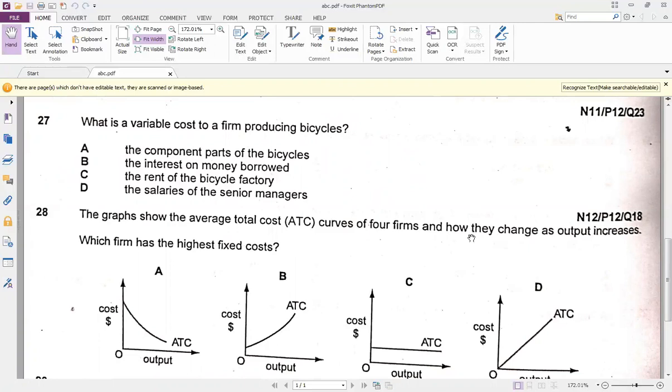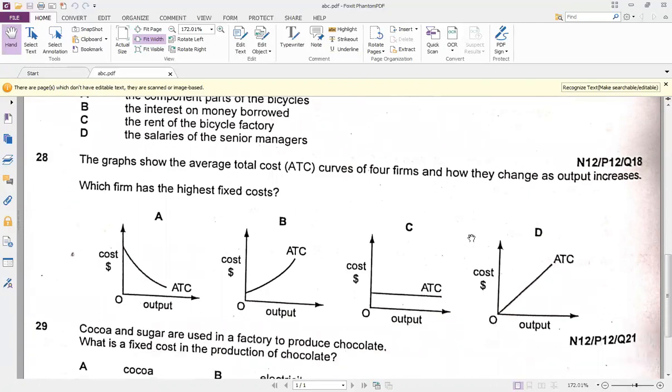Question 28: we have four curves over here. Which firm has the highest fixed cost? They are asking for the highest fixed cost. Now you can see we have average total cost. We don't have the average fixed cost or the total cost over here. We have average total cost. Now how to calculate the fixed cost? We need to divide with the output and then we need to see what is the output over here.